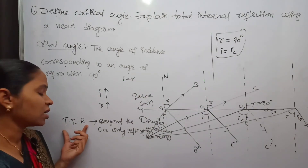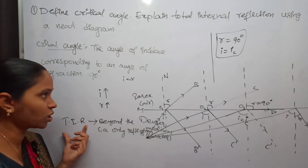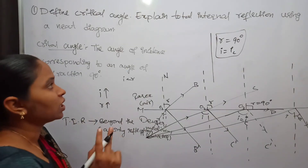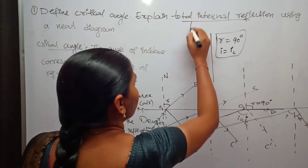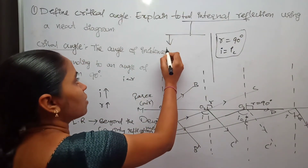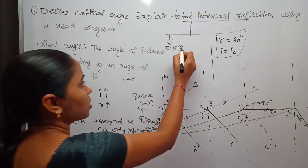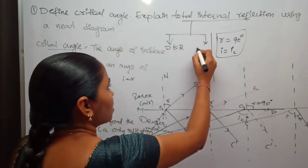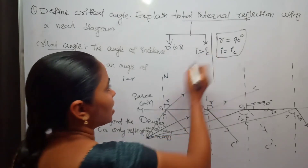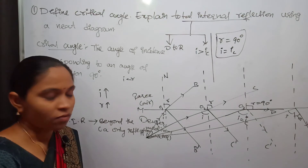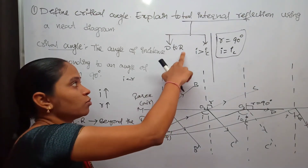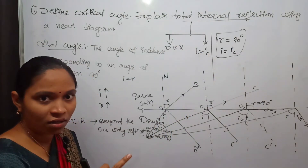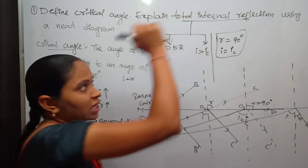Beyond the critical angle, only reflection of light is possible, which is known as total internal reflection. There are two conditions for total internal reflection: first, the light ray must travel from the denser medium to the rarer medium; and second, the angle of incidence must be greater than the critical angle. When both conditions are met, total internal reflection takes place and there is no refraction.